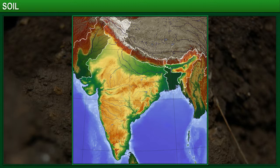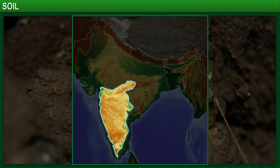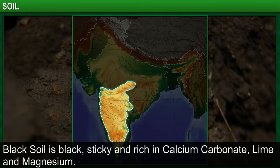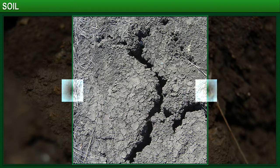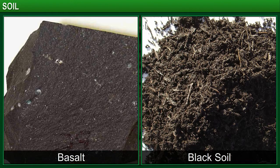For example, the black soil that we find in the Deccan region in South India is black in colour, sticky and rich in calcium carbonate, lime and magnesium. It is known for its water-holding capacity. All these properties can be attributed to basalt, the parent rock from which this type of soil is formed.